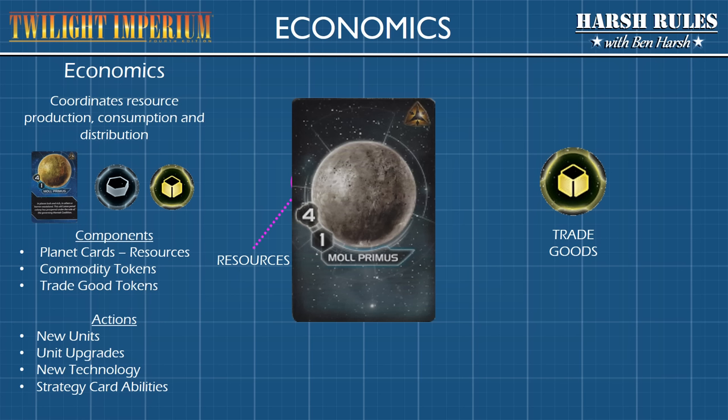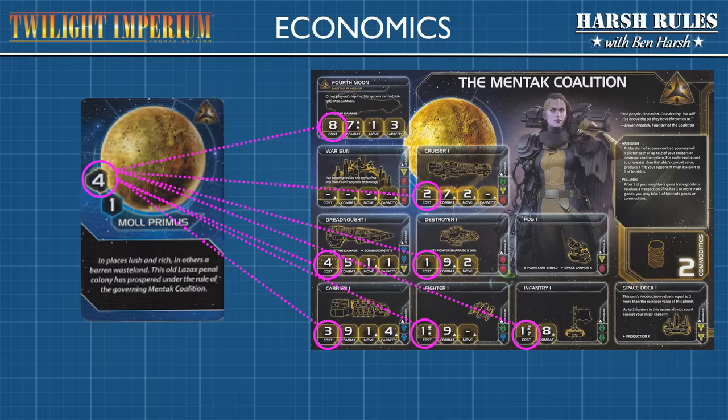It's all or nothing. Once a planet card is flipped down, all resources, influence, and technology specialties have been exhausted for that round. Besides resources, trade goods are a currency that you can also use to purchase units. The advantage of trade goods is they can be stored for later, and they can be traded amongst other players for favors.